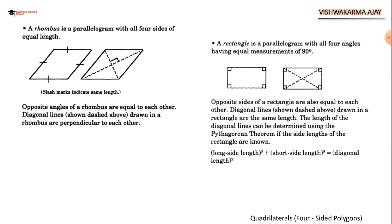A rhombus is a parallelogram with all four sides of equal length. A rhombus is also a parallelogram, but being parallel, all the sides are also equal. Opposite angles of a rhombus are equal to each other. Diagonal lines drawn in rhombus are perpendicular to each other. When you draw the diagonal lines, they cut each other in perpendicular. They make 90 degrees.